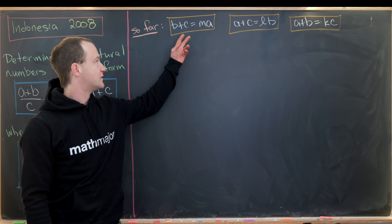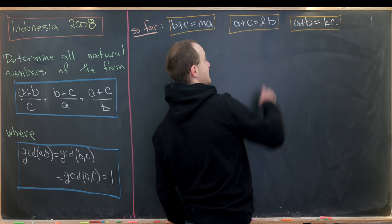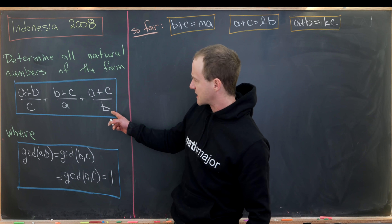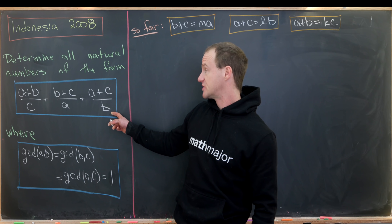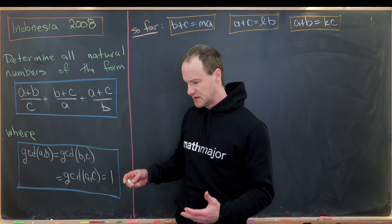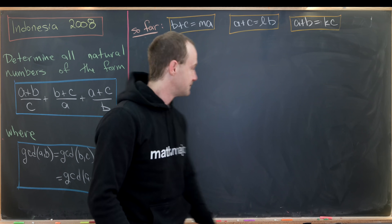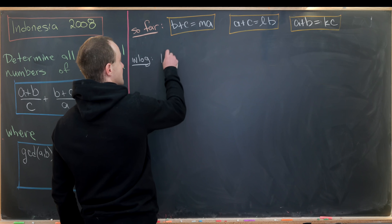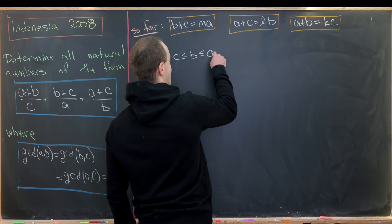So far we've shown: B+C is a multiple of A, A+C is a multiple of B, and A+B is a multiple of C. Now notice the original expression is symmetric in A, B, and C. So we only need to consider a certain ordering. Without loss of generality, assume C ≤ B ≤ A.